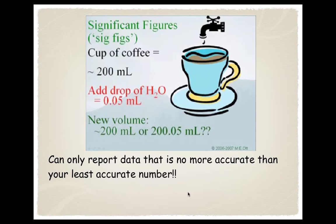Now this is just meant as an example. If you were measuring a cup of coffee and you added 0.05 milliliters to it and you had to report the data, should you report 200 milliliters or 200.05 milliliters? Well, you can only report data that's no more accurate than your least accurate number. Your least accurate number is this with one significant figure, so you have to go with still 200 milliliters. Can't add any more significant figures.